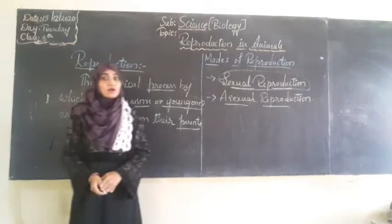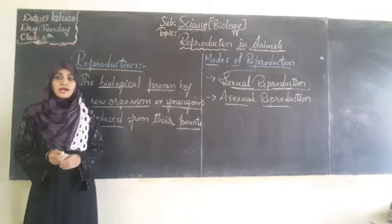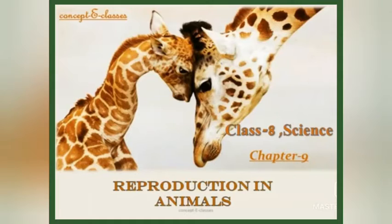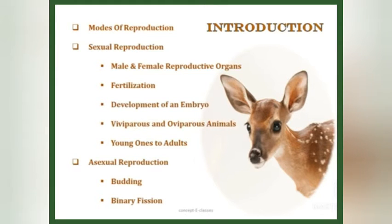We will discuss sexual reproduction in animals, both in male and female. This is Chapter 9 of Class 8 Science: Reproduction in Animals. The topics we will study are: modes of reproduction — sexual and asexual. In sexual reproduction, we will study male and female reproductive organs, fertilization, development of an embryo, viviparous and oviparous animals, and young ones to adults. In asexual reproduction, we will deal with budding and binary fission.